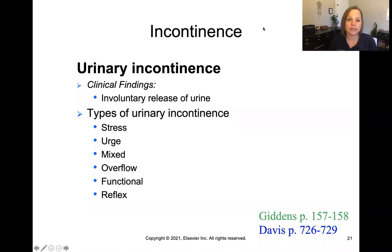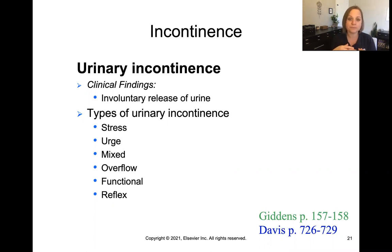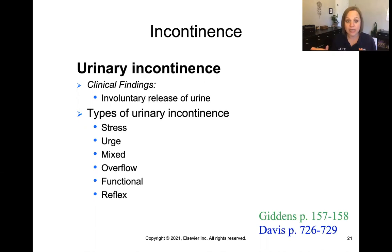Urinary incontinence refers to an involuntary release of urine when the patient is not trying to void. There are types: stress incontinence happens often with older women when the muscles around the urethra aren't supporting the bladder well, causing leakage with coughing, sneezing, laughing, or jumping. Urge incontinence means a frequent urge to void, and there can also be mixed incontinence, a combination of stress and urge.